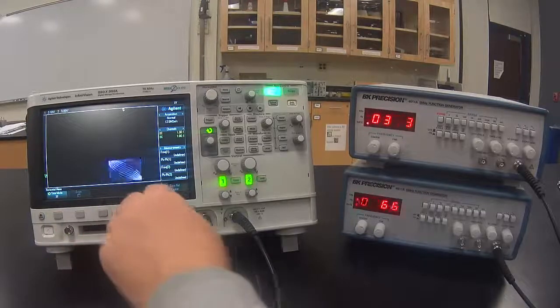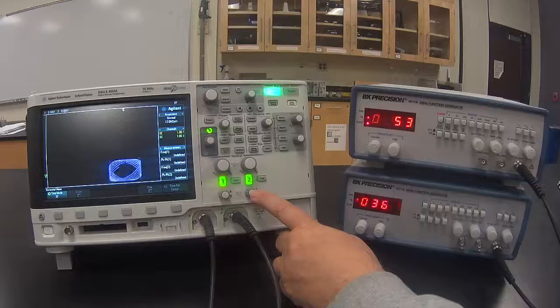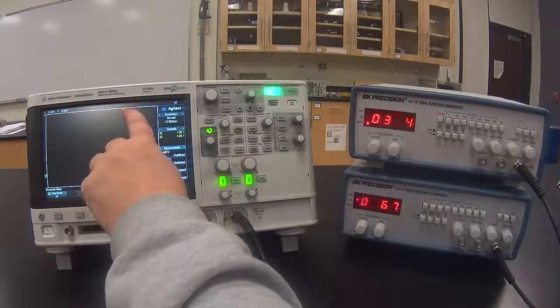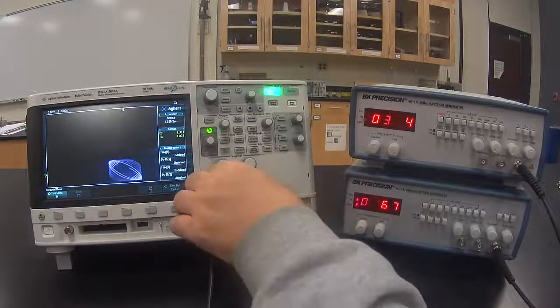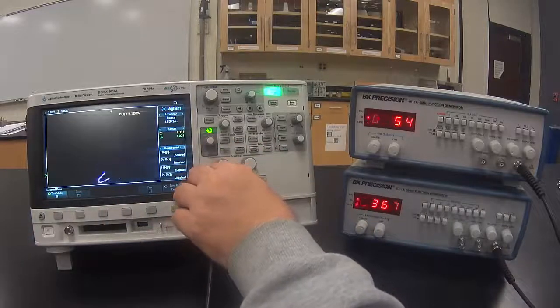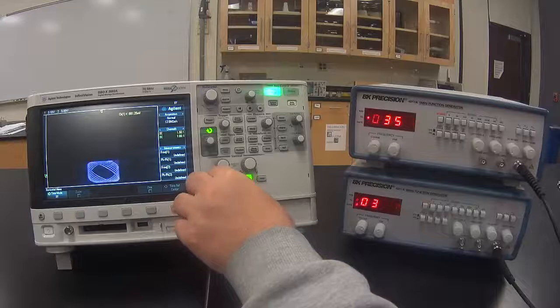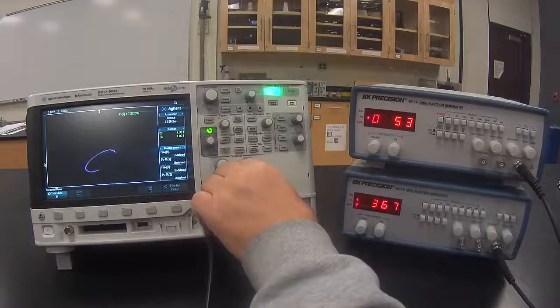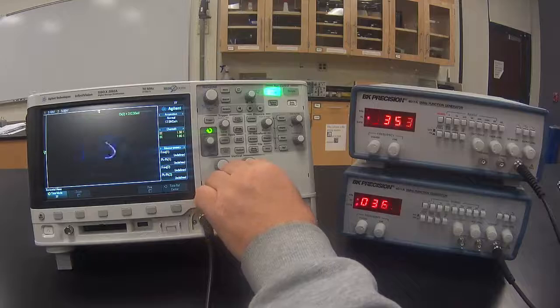Now one of the function generators is being graphed on the X axis, and the other function generator is being graphed on the Y axis. I can adjust where on the screen the figure is by adjusting the ground adjust knobs under the voltage per division knobs.